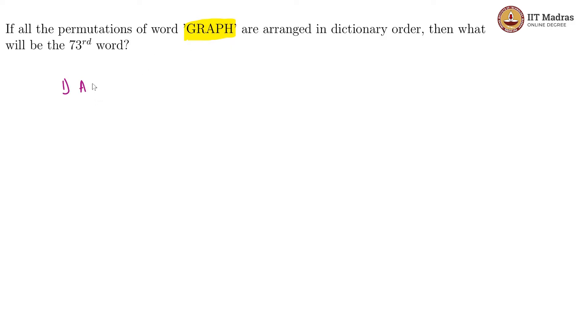And then what is the next one? We have G coming up next. This is in the alphabetical order. And then we have H, then we have P and then we have R. So this would be the very first word. And then the second word would be what is next? You still have A, you still have G, you still have H, and these two are going to be exchanged. So this would be the second word.